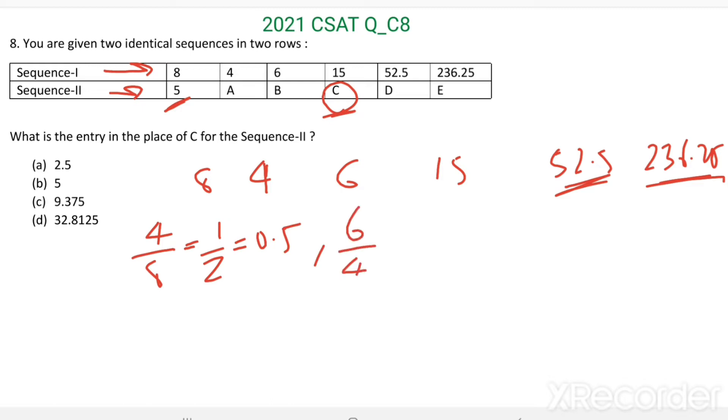Then 6 divided by 4 is equal to 3/2, this is equal to 1.5. 15 divided by 6 is equal to 5/2, this is equal to 2.5.